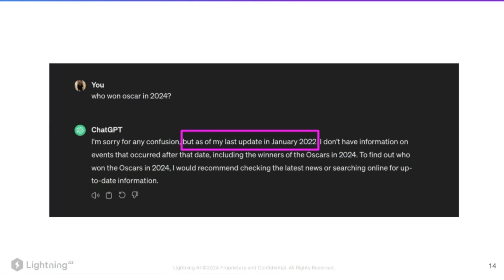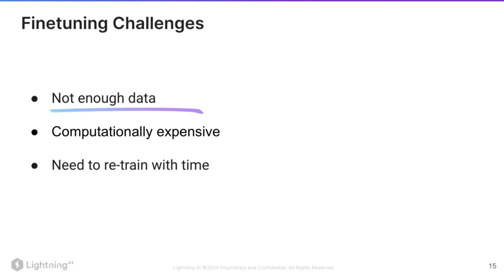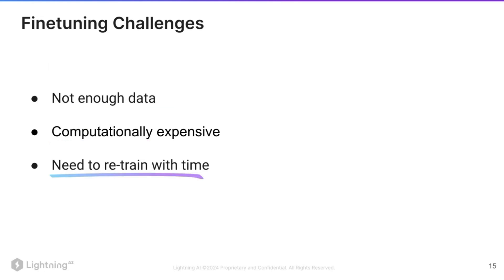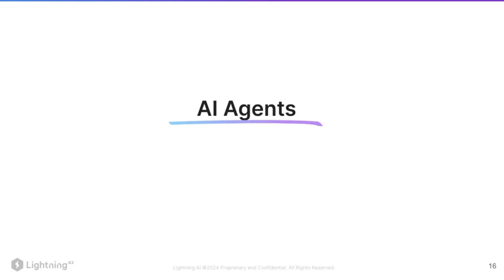Coming back to our question: our model like ChatGPT couldn't respond to the latest information. How do we solve this? One way could be to fine-tune the large language model with latest data — for example, scraping Google every day — but it's not a very scalable solution. It has a lot of challenges: you might not have enough data, it's computationally expensive, requires a lot of GPUs, and you'd need to retrain it constantly. That's why we are going to talk about AI agents and see how they can solve this problem.